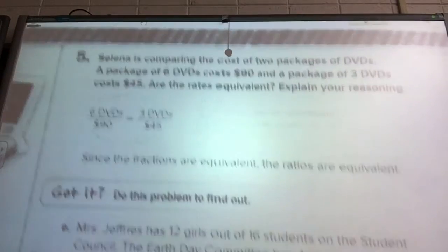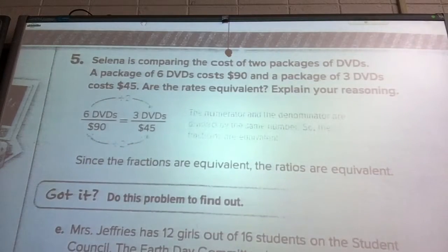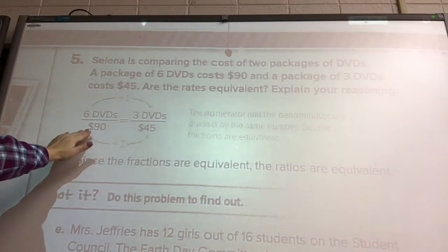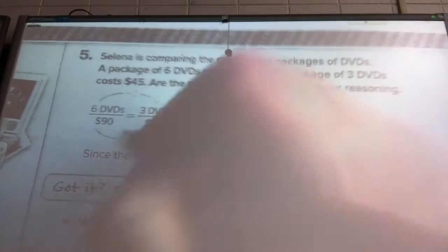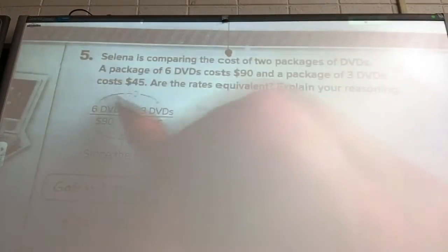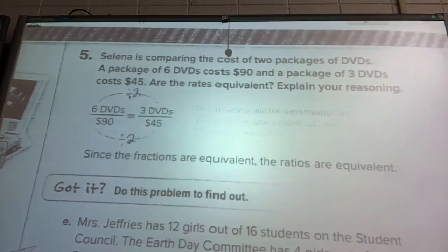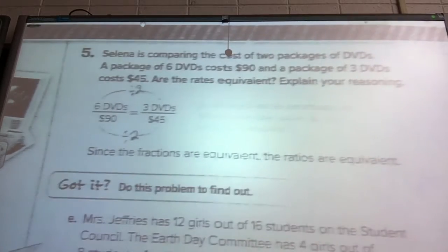Let's look at this one. Selena is comparing the cost of two packages of DVDs. A package of 6 costs $90, and a package of 3 costs $45. Are these equivalent? We've got 6 DVDs for $90 and 3 DVDs for $45. We have to figure out how to get from 90 to 45. They showed us divided by 2. If we divide 6 by 2, would we get 3? Yes, we would. So these are equivalent. You can do the same on the top and bottom, they're equivalent.